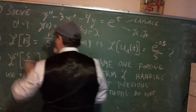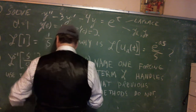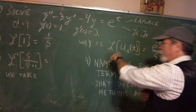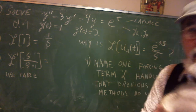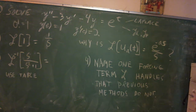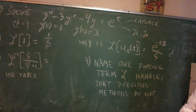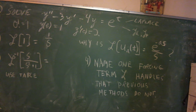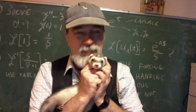We just did the Laplace transform of one, which turned out to be one over S. How come the Laplace transform of the Heaviside function is e to the negative AS over S instead of just one over S? Because the Heaviside function is zero and then it's one — that's all it is. So how come we got this extra complicated piece?